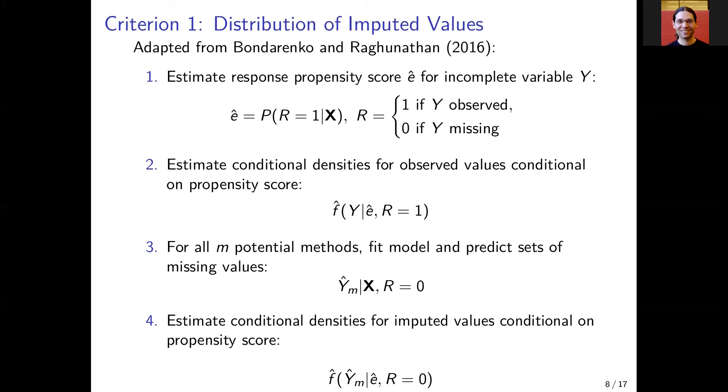The second step, we use the estimated response propensity score to estimate the conditional density for the observed values conditional on the propensity score.